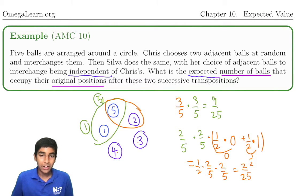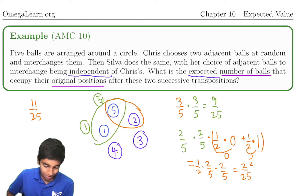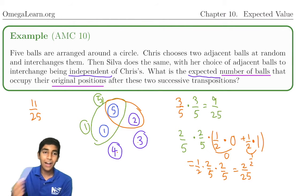That's great. Now, how can we finish the problem from here? From here, we just see that in total, it has an eleven over twenty-fifths probability of being at its original position at the end. So for five balls, that's eleven over twenty-fifths times five.